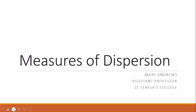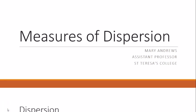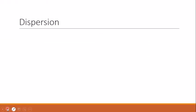Today we will be discussing measures of dispersion. The various measures of central value discussed in the previous video give us one single figure that represents the entire data, but the average alone cannot adequately describe a set of observations unless all the observations are the same.